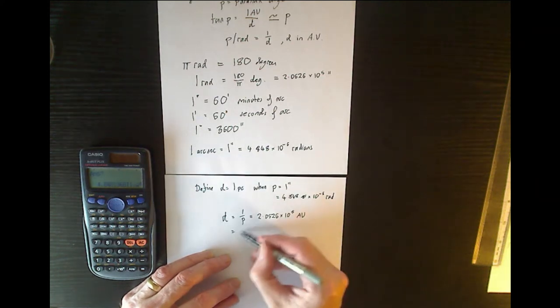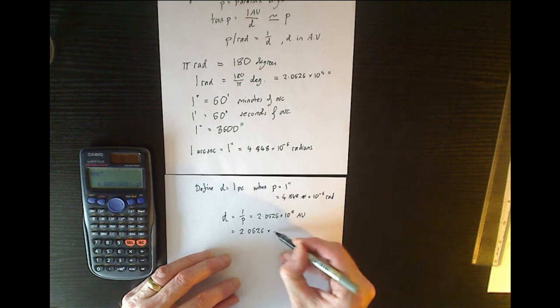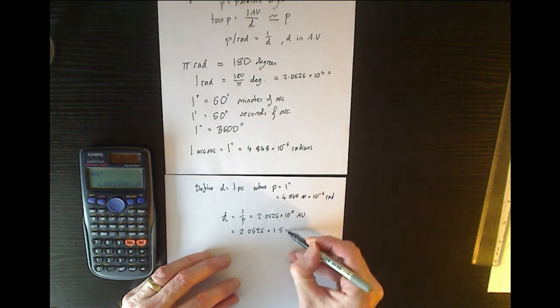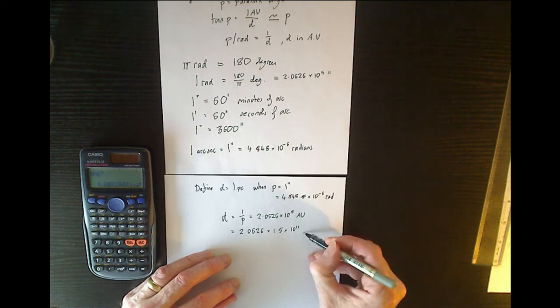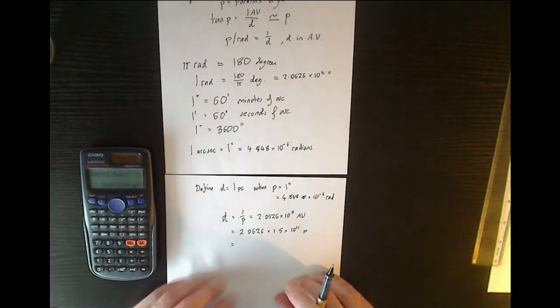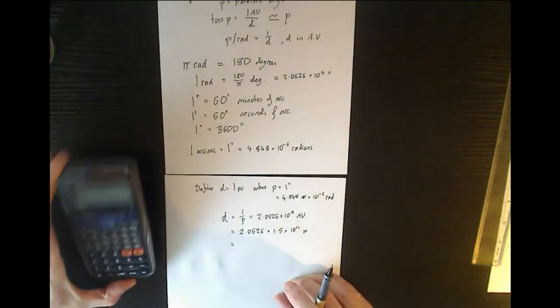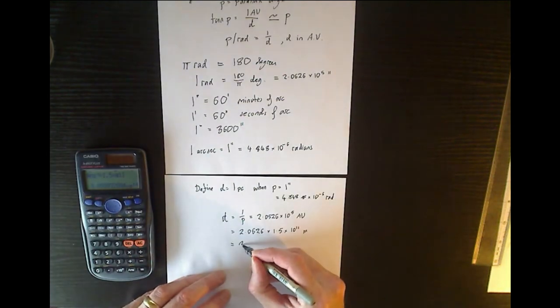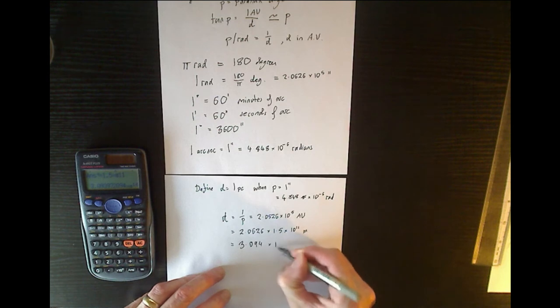Now one astronomical unit is 1.5 times 10 to the power of 11 meters, being the distance between the Earth and the Sun. So that gives us a value in meters, which is 3.094 times 10 to the 16 meters.